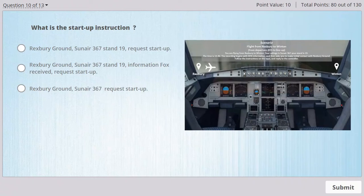Are you ready? This is Rexbury departure information, Foxtrot 1330 Zulu time. Take off and landing runway 29. Wind 260 degrees, 12 knots. Cav OK. Temperature 14, dew point 11. QNH 1023. No sick. This was information, Foxtrot. Ask for startup.